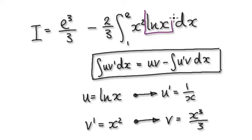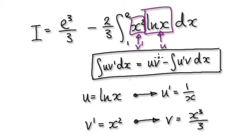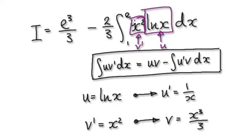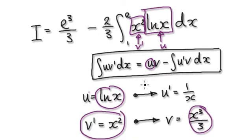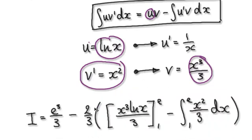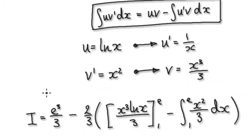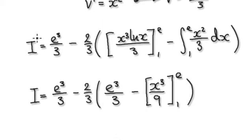Let ln(x) be your u and x² be your v prime. Follow the normal procedure: if u equals ln(x) then u prime equals 1/x; if v prime equals x² then v equals x³/3. Now blindly follow the formula: u times v minus the integral of u prime times v.